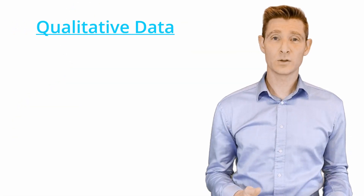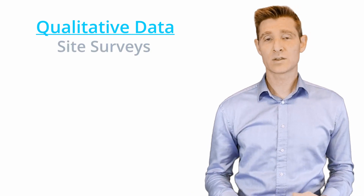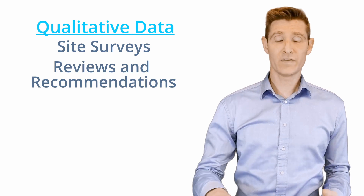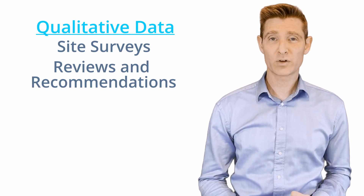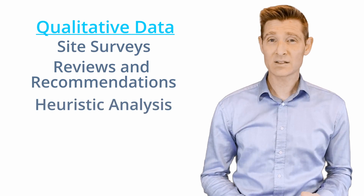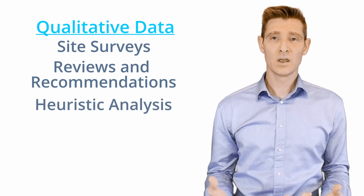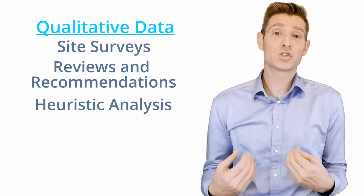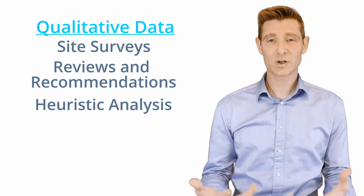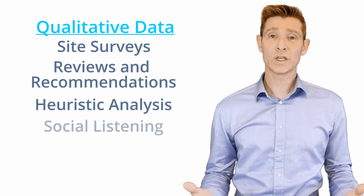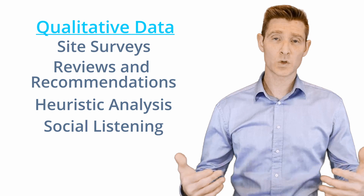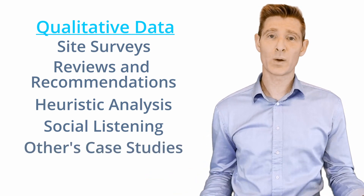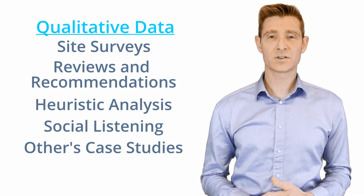Qualitative data is another place to look when figuring out what to test. You might look at surveys on the site, product reviews or company reviews, and heuristic analysis — putting yourself in the shoes of the visitors to see what pain points they might run into. You could also look at social listening — what are people saying on social media — and other case studies. If other companies have run similar tests and have case studies on something you might want to test, that's another qualitative way to figure out what to test.